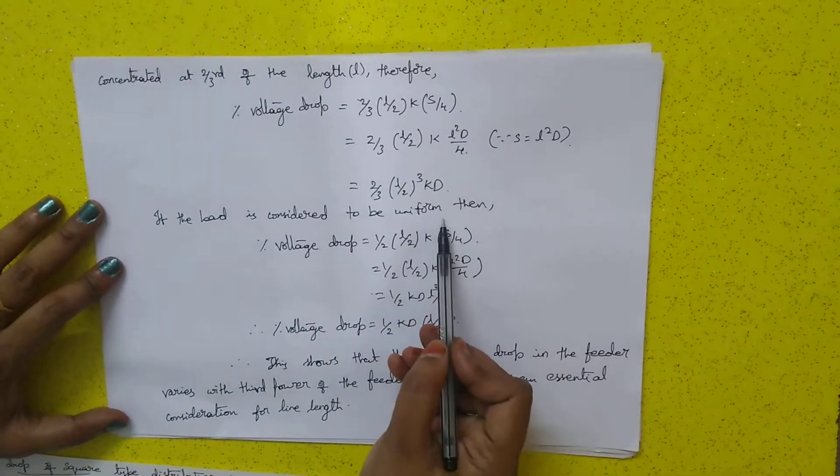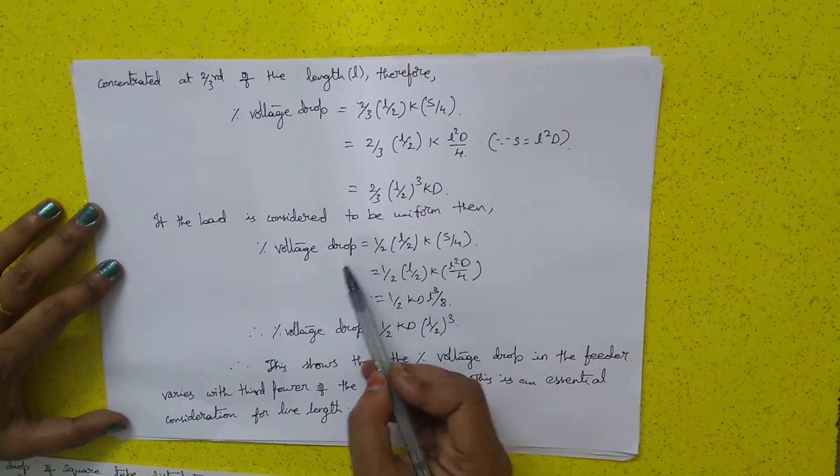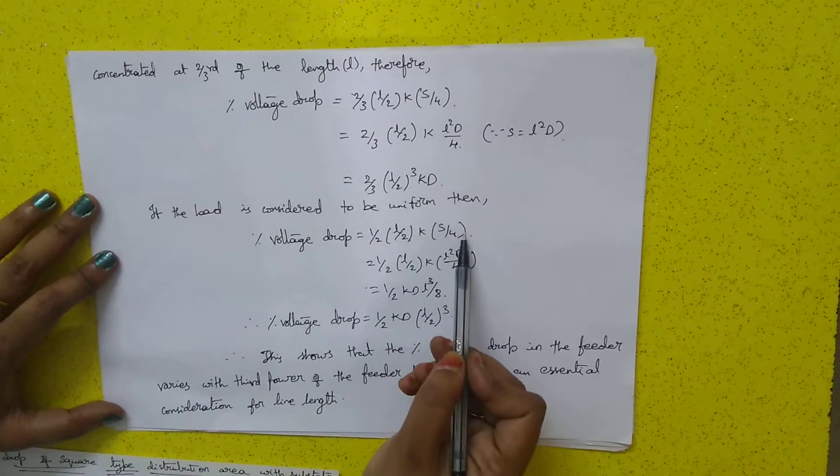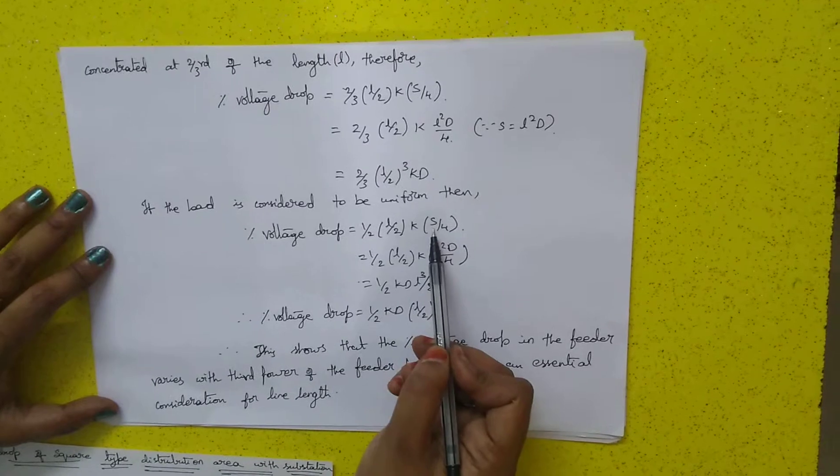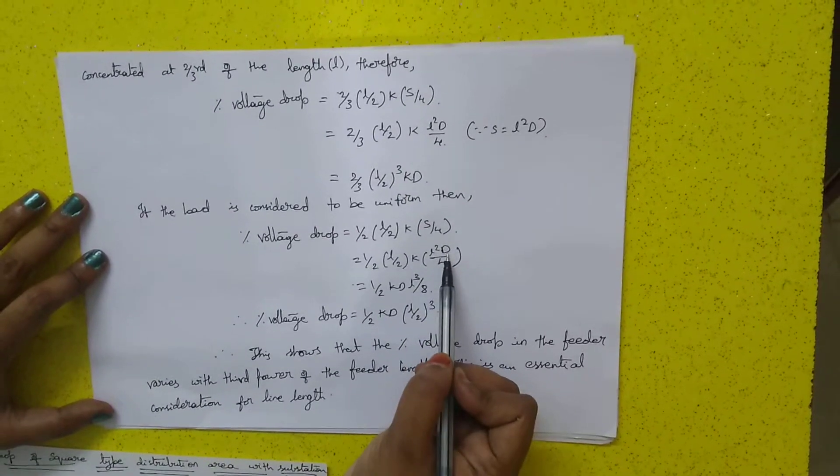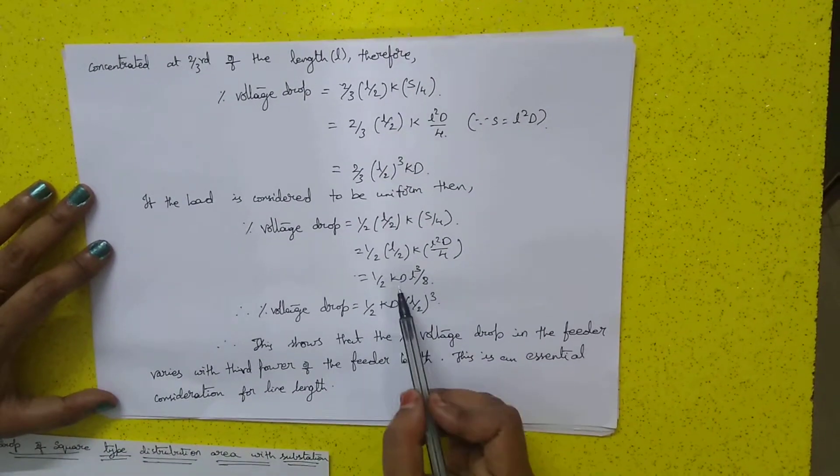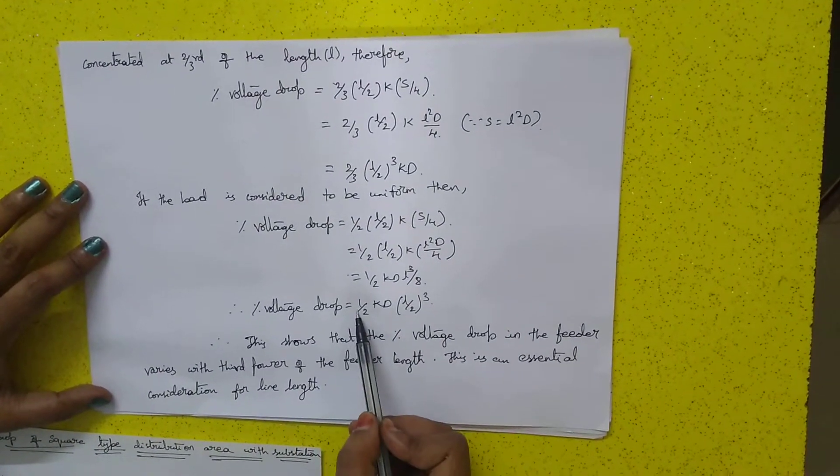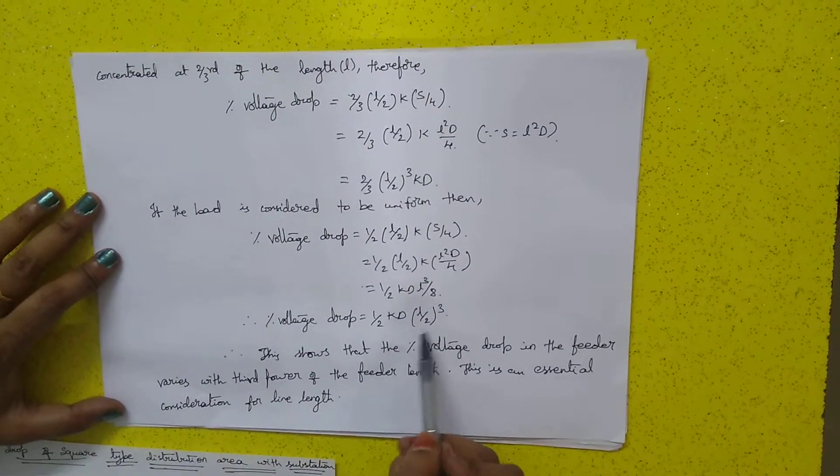If the load is considered to be uniform, then the percentage voltage drop will be half of L by 2, k, s by 4. We know that s equals L-square d. Substituting s equals L-square d in this equation, we obtain half k into d into L-square by 8. Therefore, the percentage voltage drop equals half k into d into L by 2 whole cube.